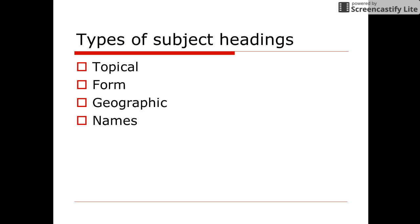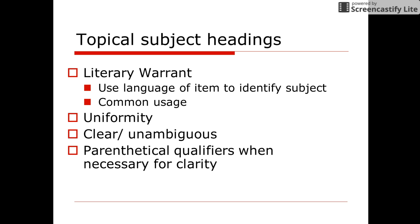There are types of subject headings and the various forms are topical, form, geographic, and names. Topical subject headings are the most commonly used and the most frequent type of headings used to access an item. Literary warrants refers to the practice of using the language or terminology of an item to describe the contents or subject of the work. Topical subject headings provide uniformity and consistency from work to work if they are about the same subject.